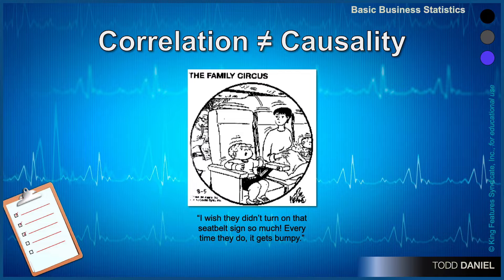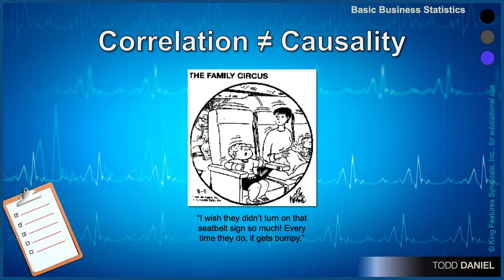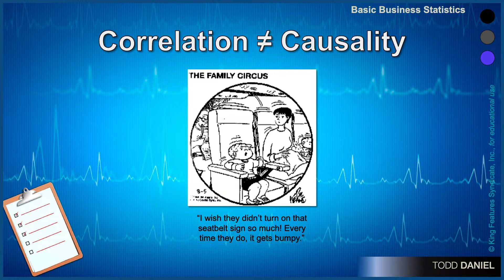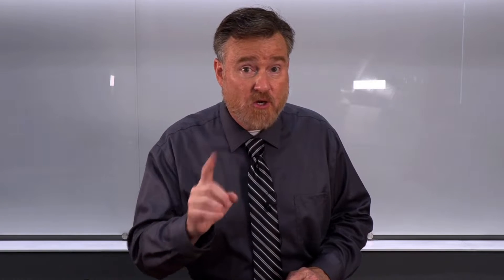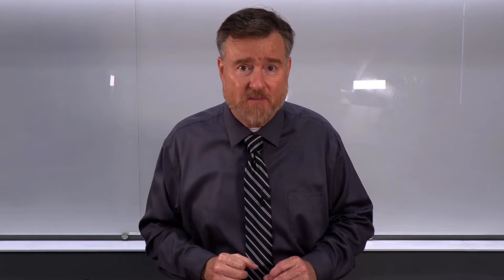In this comic we see a little boy sitting on a plane. He turns to his mother and says, 'I wish they didn't turn on that seat belt sign so much. Every time they do it gets bumpy.' Now this little boy is a great scientist because he is noticing that when one thing changes in his environment something else always follows. He is learning cause and effect thinking. We can't fault him at all for thinking that turning on the seat belt sign causes the turbulence.